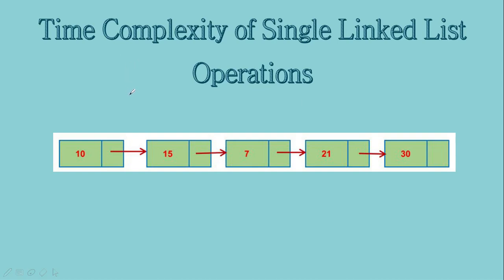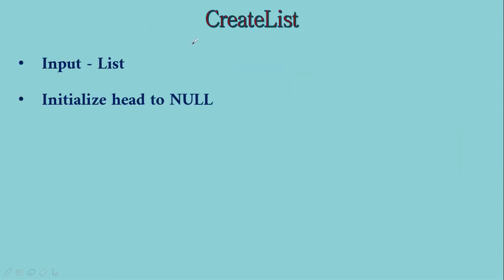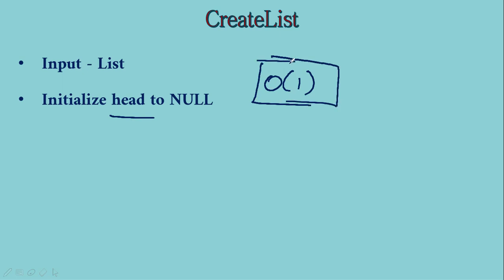Hi everybody. In this video we will be talking about the time complexity of the single linked list operations. Let us start with the create list function. When we look at the create list function, there is only one thing that we will do — we will initialize the head to null. Since there is only one member related to the linked list, which is head, we just make it null. This operation's time does not depend on any other factors; it is not going to depend on how many elements will be inserted. So that time is constant — we represent it as big O of 1.